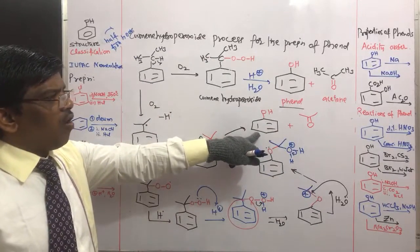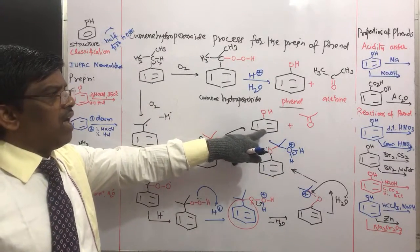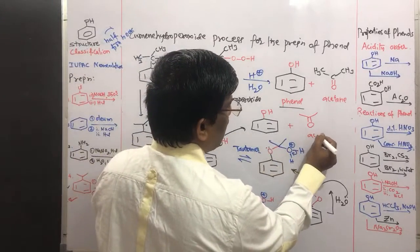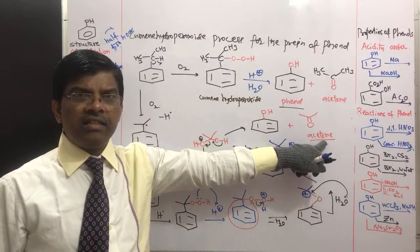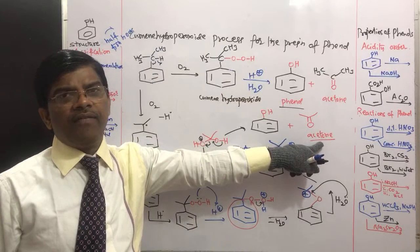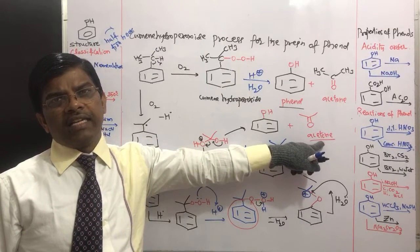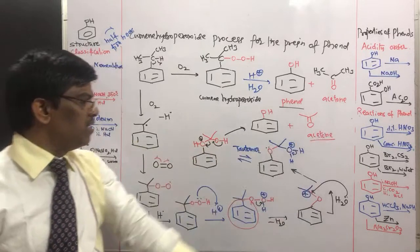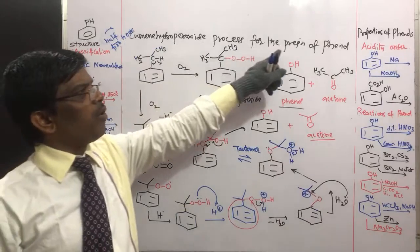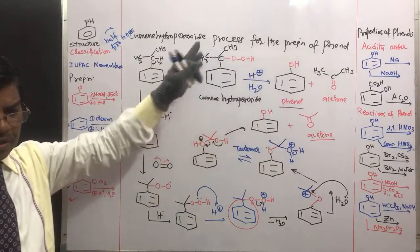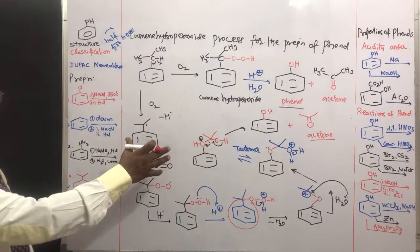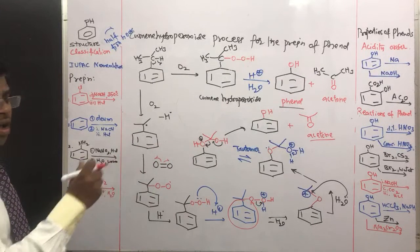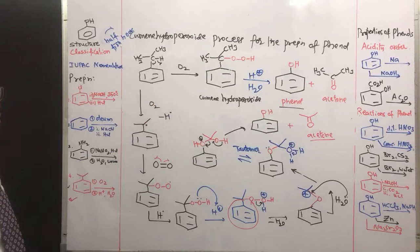The overall outcome is phenol and acetone. Acetone is a very important industrial solvent, commonly used for washing, and is also a starting material for different types of organic compounds. This is how the cumene hydroperoxide process works for the preparation of phenol. If you have any queries, please write in the comments box. Thank you.